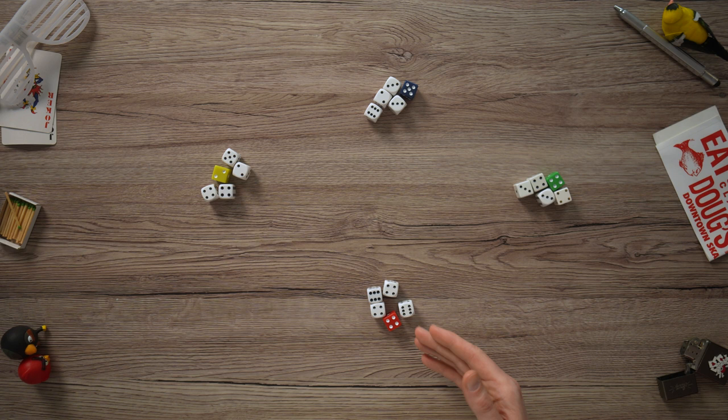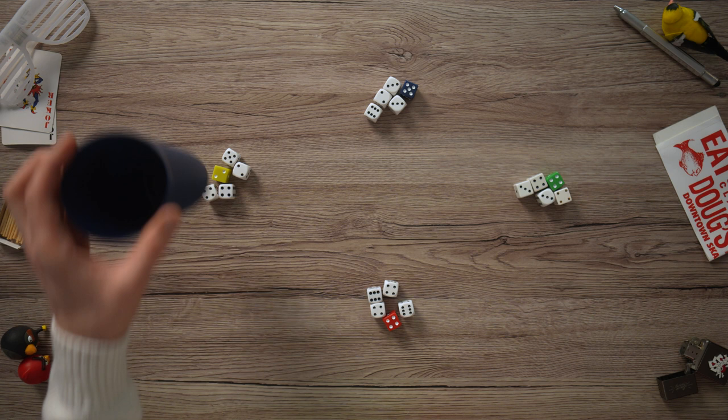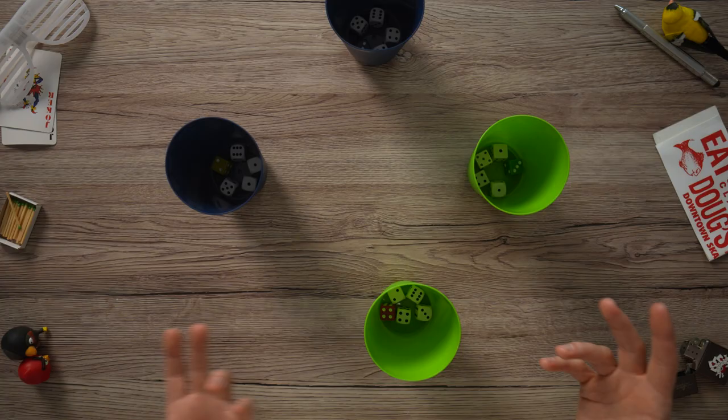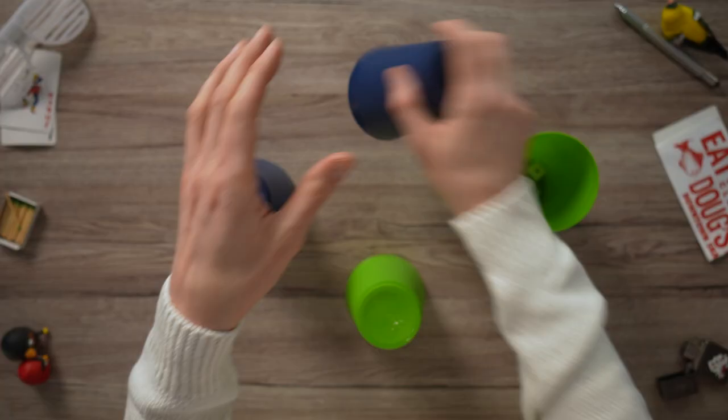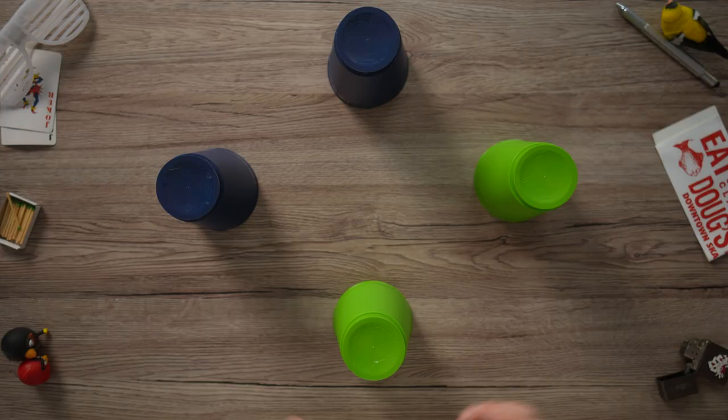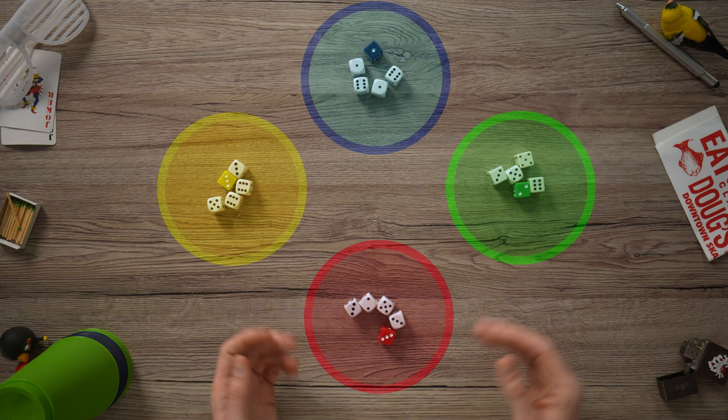Each player will have a cup, and we'll put our dice in the cup. Everybody shuffles their dice in the cup and flips it over. Now your dice are just for you to look at. You can't look at anybody else's and very carefully look under the cup. All four sets would be covered, and we would look at our dice.